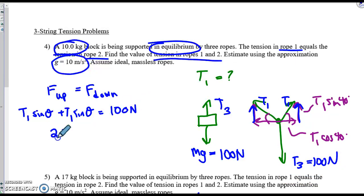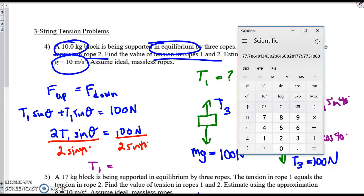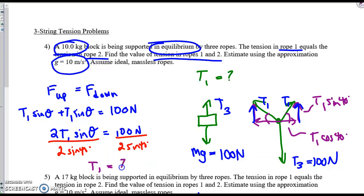The left side is equivalent to calling that, we could call it 2t1 sine thetas. There are two of those terms. I divide both sides by 2, and I divide both sides by sine of 40. 2 sine 40, and what do I get for t1? This comes out to 77, let's see, 77.8. And that is our answer.